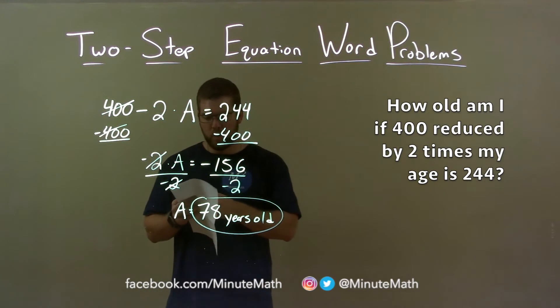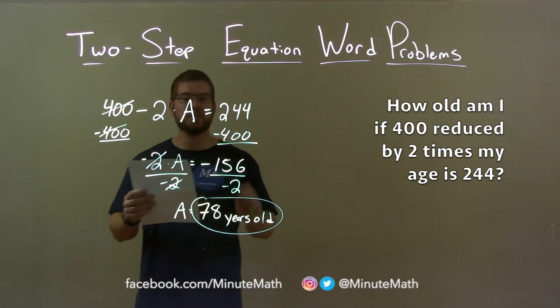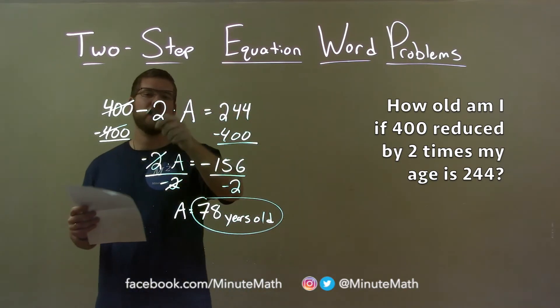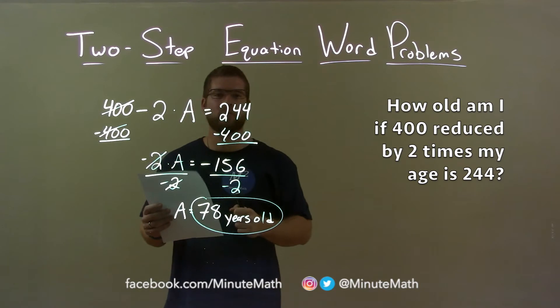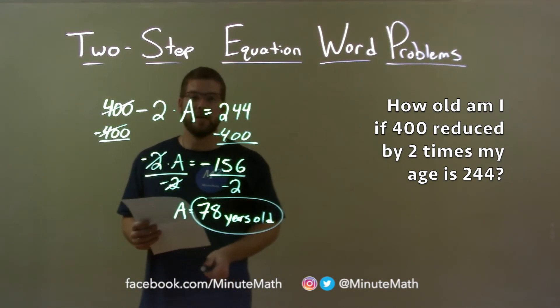So quick recap: we're given the word problem, how old am I if 400 reduced by two times my age is 244? With that information I created the equation 400 minus 2A equals 244. A represents my age, which came out to be 78 years old.